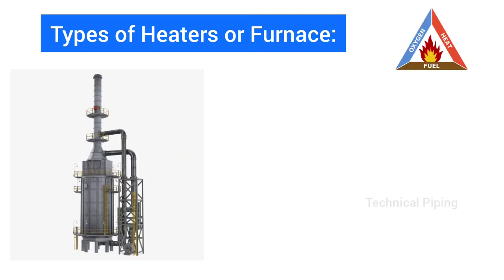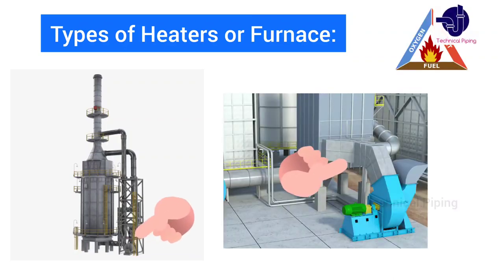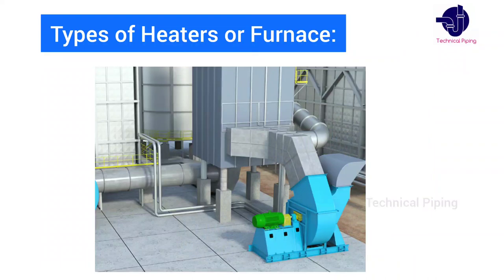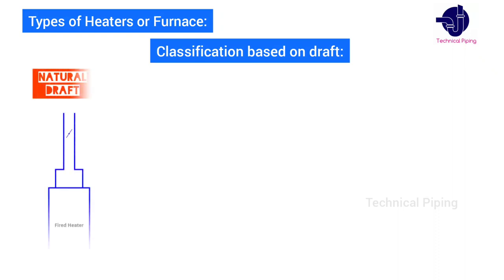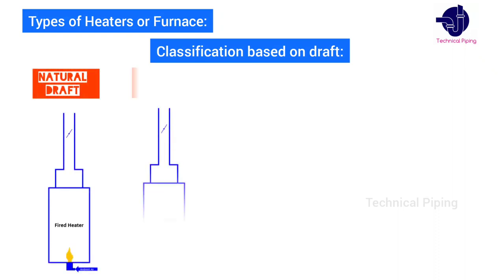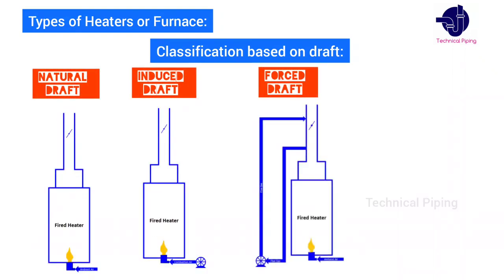Types of heaters or furnaces used in major industries — furnaces are generally classified by the way in which the air for combustion is supplied to the burners. This air supply is commonly called the draft. Hence, furnaces are classified as the following types: natural draft, induced draft, forced draft, and balanced draft.